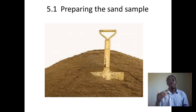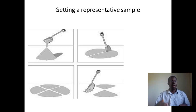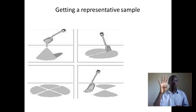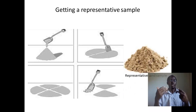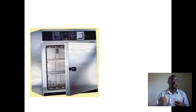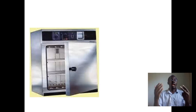Preparing the sand sample: the sand sample of about 12 kilograms is placed on a large metal tray and a representative sample of about 1.5 kilograms is obtained. This can be done by the quartering method, whereby the sand sample is heaped and divided into four approximate proportions forming two diagonals. One diagonal is retained and the other is discarded, and the process is repeated until the sample is reduced from 12 kilograms to 1.5 kilograms.